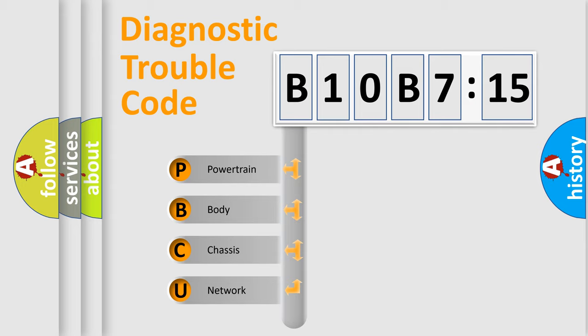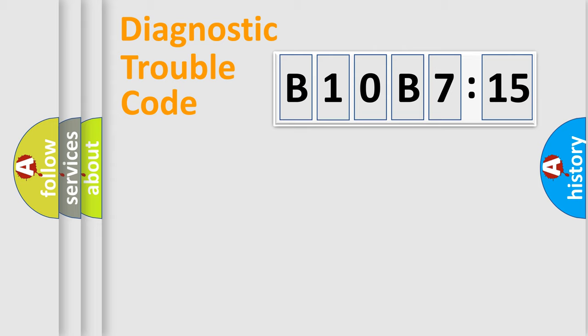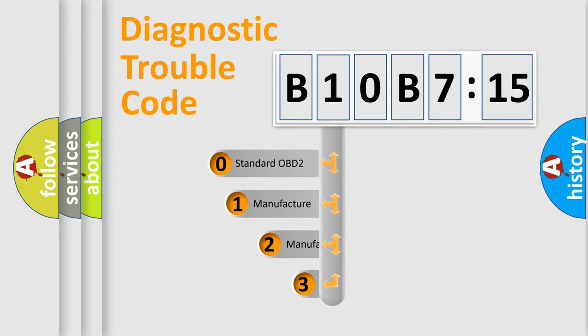We divide the electric system of automobile into four basic units: Powertrain, Body, Chassis, and Network. This distribution is defined in the first character code.